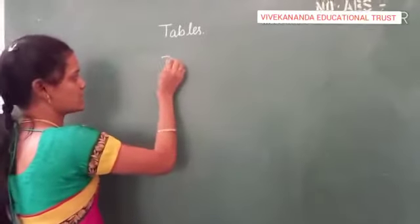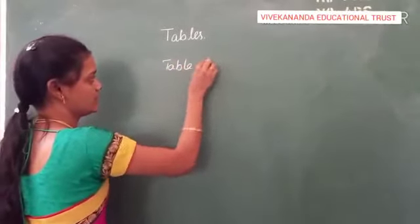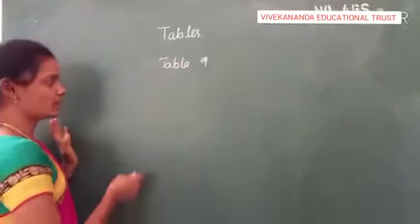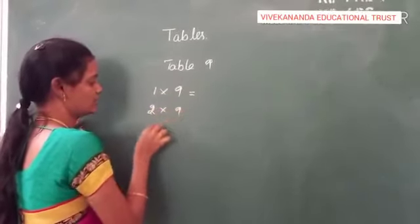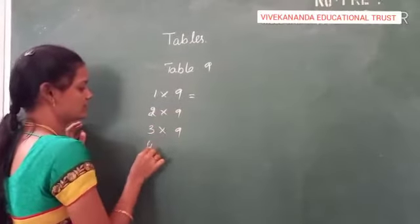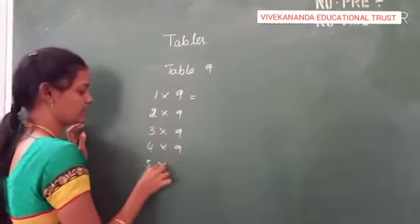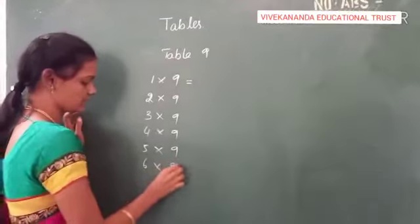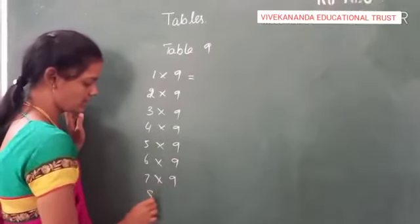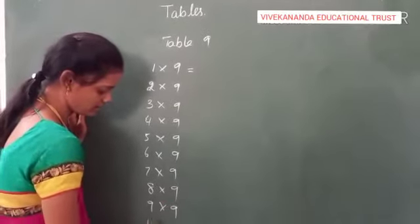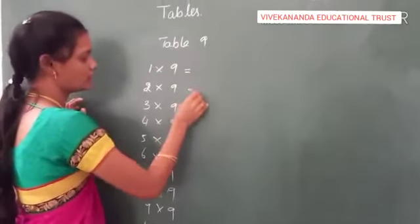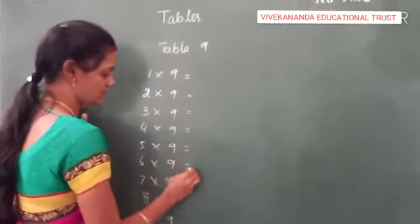Next table 9. Table 9 is very very easy. So 1 time 9, 2 nines are, 3 nines are, 4 nines are, 5 nines are, 6 nines are, 7 nines are, 8 nines are, 9 nines are, 10 nines are. Now we are going to find the answer.